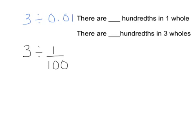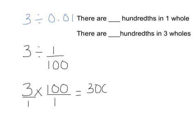Now when I do my method of leave it, change it, flip it, I can multiply across. This 3 is really a 3 over 1. 3 times 100 equals 300. 1 times 1 equals 1. 300 divided by 1 is 300.